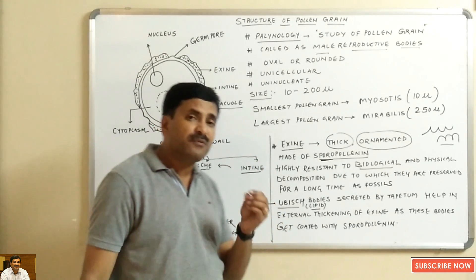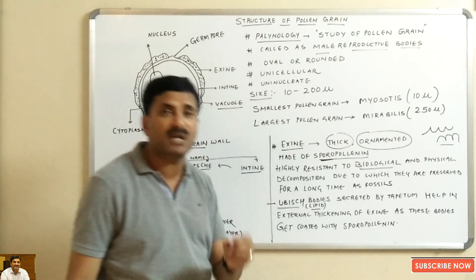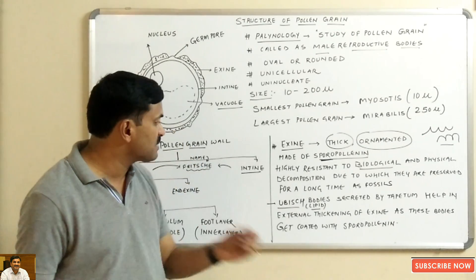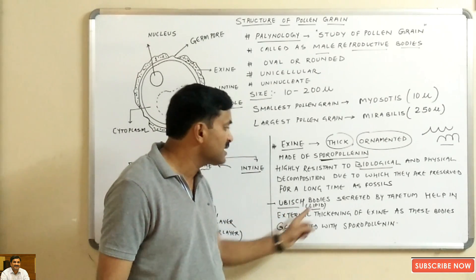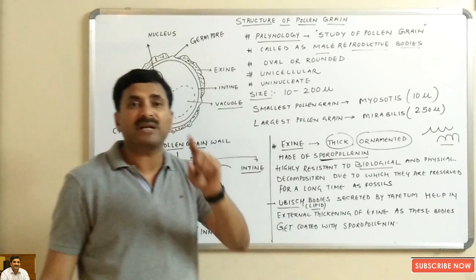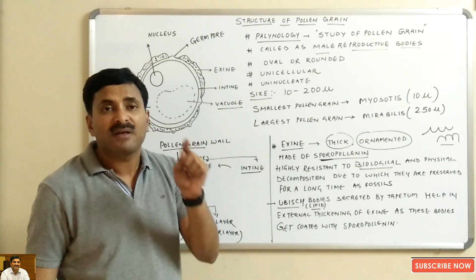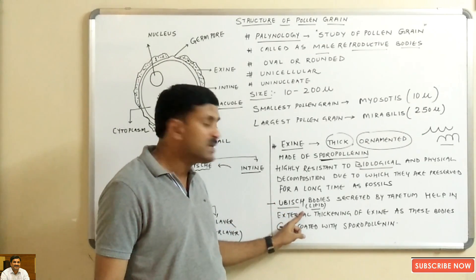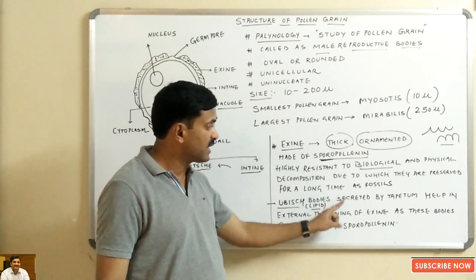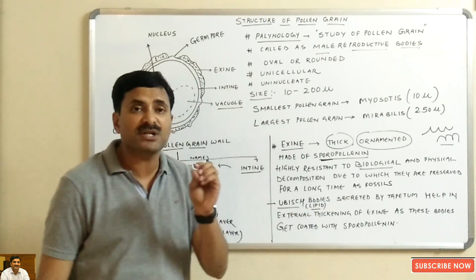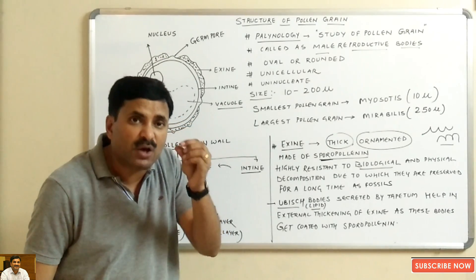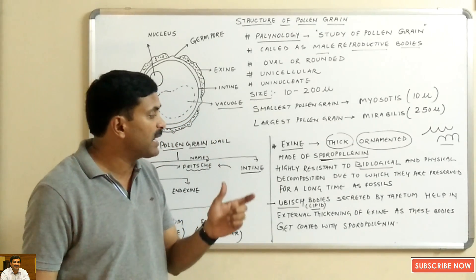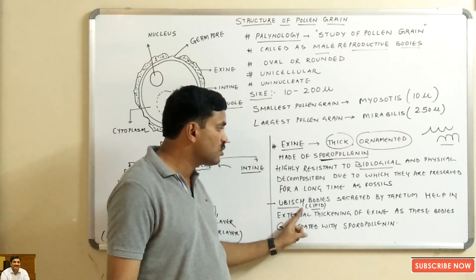The question arises: which bodies are responsible for the thickening of the exine? There are special lipid bodies known as ubisch bodies, which are secreted by the tapetum. The tapetum secretes these ubisch bodies, which are lipid in nature and help in the external thickening of the exine. These ubisch bodies get coated with sporopollenin and are responsible for increasing the thickness of the exine.